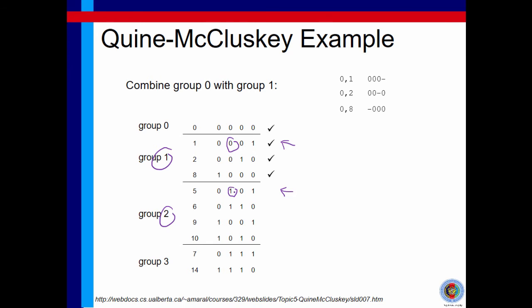So minterm 1 and 5 can be combined and we will need to put a tick next to minterm 5. And also, let me highlight again, we combine minterm 1 and minterm 5. And the variable that is dropped in this case is variable b. So, as you can see here, it is 0-01. This is the notation for this implicant.